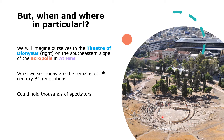What we are looking at are the remains from a 4th century BC renovation, so it wouldn't have looked quite like this in the 5th century, but it gives you a general idea. The image specifically shows modern Athens in the background — a nice interaction between the old and the new.